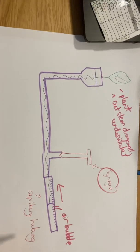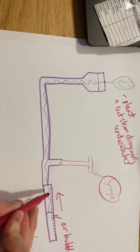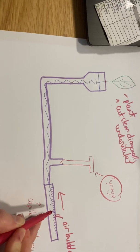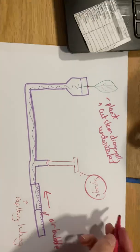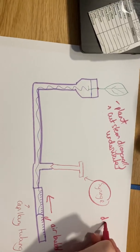Now this capillary tubing, as you can see, has got a scale on it like a ruler, so we can measure how far along that air bubble has gone in a certain period of time. Remember, rate of transpiration: we're going to do distance moved divided by time.